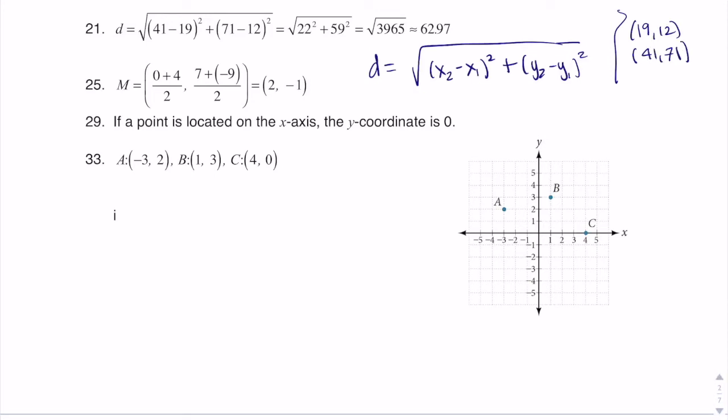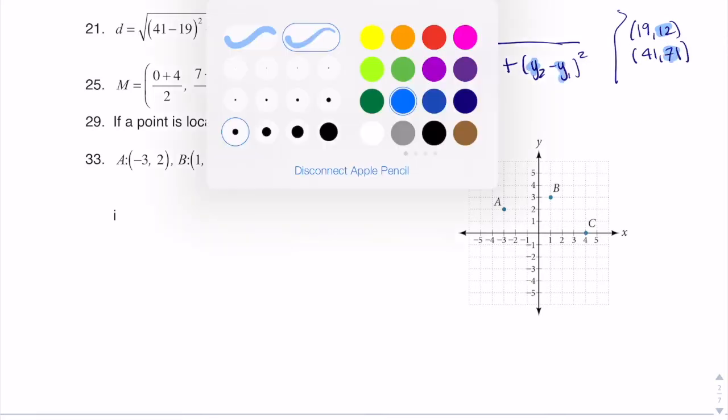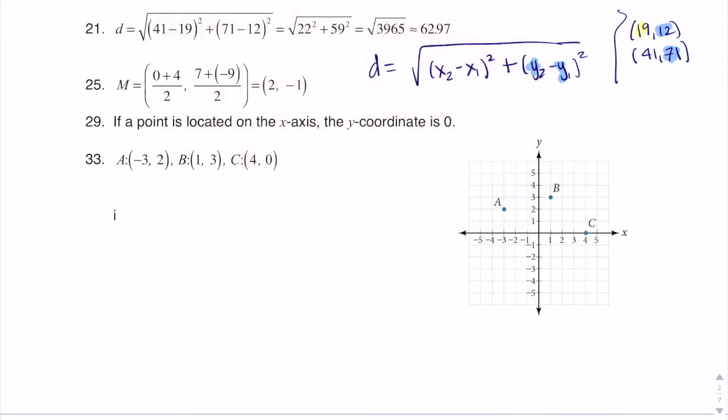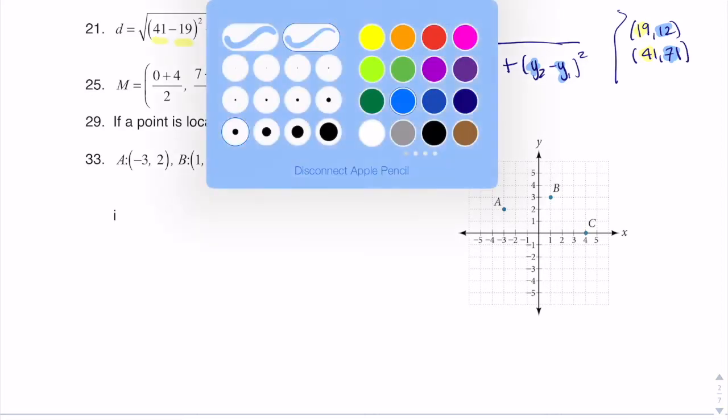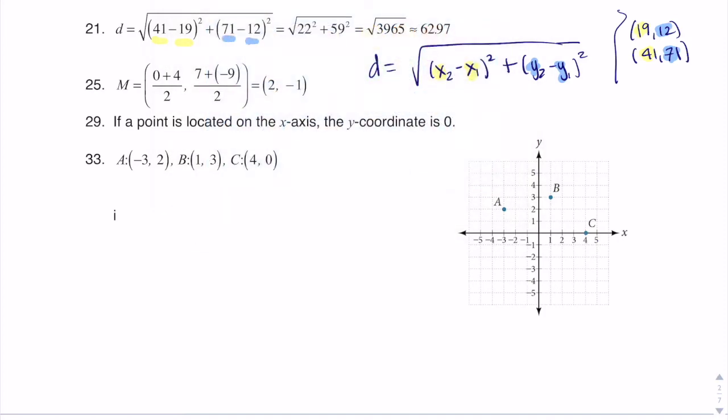So I'm going to go ahead and take the y-coordinates and put them in the y-parentheses. Let me change the color out here. And I'll take the x-coordinates, and I'll put them in the x-parentheses. So that's where you see me getting the difference in the x-coordinates over here, and then the difference in the y-coordinates over here.